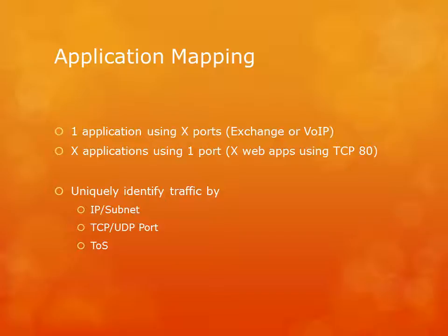Now I want to talk about one trick that a good Reporter Analyzer administrator has in his tool bag — it's called application mapping. Application mapping is used for two different scenarios. The first is when you have one application that uses multiple ports, such as Exchange or VoIP. The second reason is when you have a bunch of applications that use the same port but you don't want to report on them all together — such as web applications. With application mapping, you create rules that uniquely identify traffic by IP, subnet, TCP/UDP port, TOS value, or any combination, and reclassify that traffic to a different port.